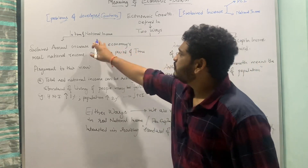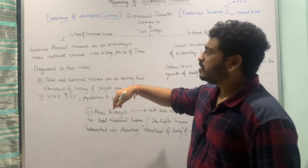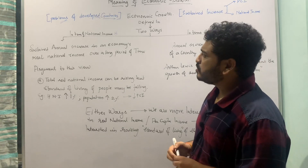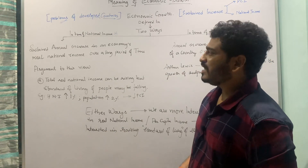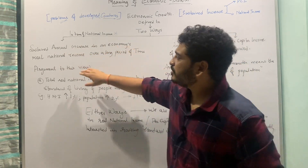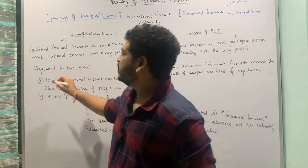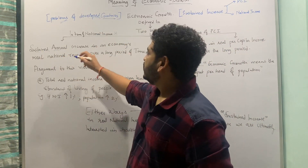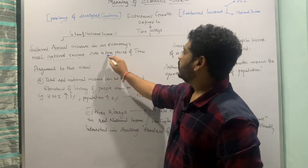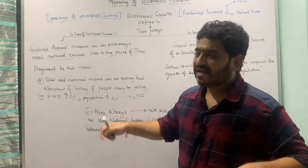There are two different ways in which you can define economic growth. The first way boils down to the definition in terms of national income. It is talking about a sustained annual increase in an economy's real national income over a long period of time. Whenever this increase is sustained over a longer period of time, then it is called economic growth.